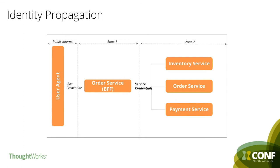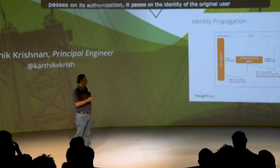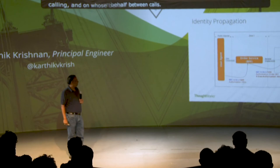Let's talk about how we've solved this problem. Same scenario: Alice requests order 1234, but now when the BFF turns around to the order service, it not only passes on its own authorization, it also passes on the identity of the original user who intended to look for this data. So now the order service has full knowledge of who is calling and on whose behalf it's been called.